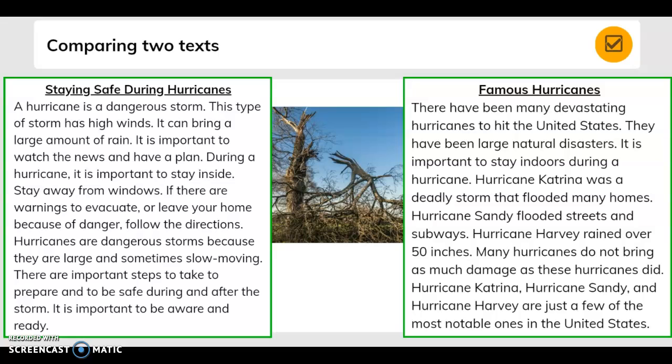Hurricane Katrina was a deadly storm that flooded many homes. Hurricane Sandy flooded streets and subways. Hurricane Harvey rained over 50 inches. Many hurricanes do not bring as much damage as these hurricanes did. Hurricane Katrina, Hurricane Sandy, and Hurricane Harvey are just a few of the most notable ones in the United States.